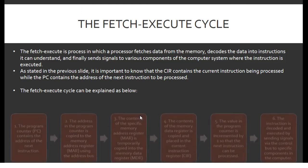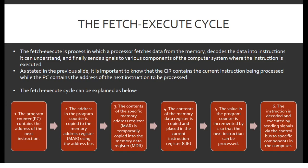The fetch-execute cycle steps are as follows: 1. The program counter contains the address of the next instruction. 2. The address in the program counter is copied to the memory address register using the address bus. 3. The contents of that specific memory address are temporarily copied into the memory data register. 4. The contents of the memory data register are copied and placed in the current instruction register. 5. The value in the program counter is incremented by 1 so that the next instruction can be processed. 6. The instruction is decoded and executed by sending signals via the control bus to specific components in the computer.